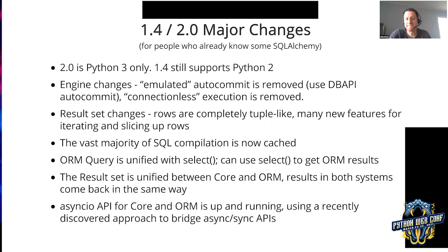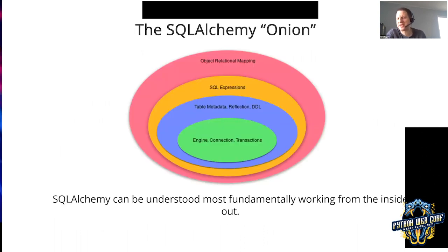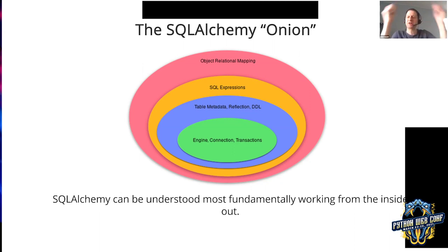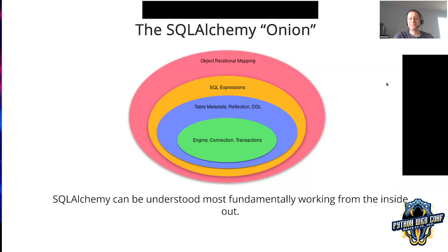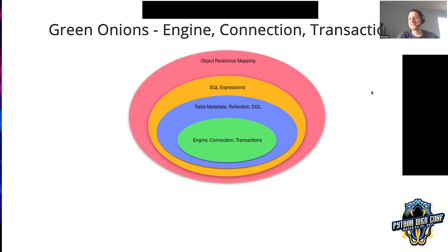AsyncIO is there using a recently discovered approach to bridge async and sync APIs. This is the SQLAlchemy onion — it's kind of like layers where the innermost layer is where we start for this talk and you add more layers. The green onions are the engine and the connection. The engine has to work with the Python DB API, which is what we use to talk to most databases. With AsyncIO it's not quite the same story, but generally the DB API, PEP 249, is the de facto system for Python database interfaces.